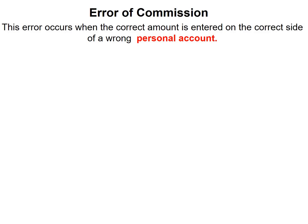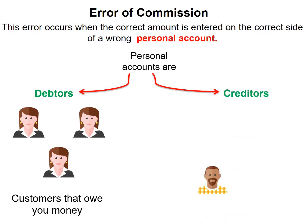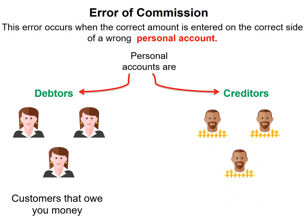Our next error is the error of commission. This error occurs when the correct amount is entered on the correct side of a wrong personal account. Personal accounts are debtors and creditors. Debtors are customers that owe you money, and creditors are suppliers that you owe money. Our debtors are assets and our creditors are liabilities.